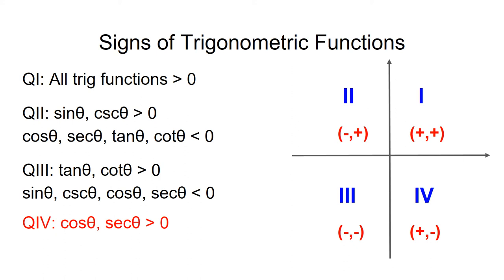In quadrant four, x is positive, which means cosine theta is greater than zero, and secant theta, which equals 1 over cosine theta, is also greater than zero. y is negative, so sine theta is negative, and so is its reciprocal, cosecant theta. Tangent theta, being the ratio of a negative number to a positive number, is also negative, as is its reciprocal, cotangent theta.